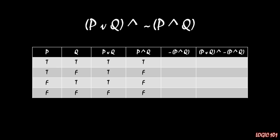For column five we have the negation of column four, which essentially flips the on-and-off switch from column four. We take all values of TRUE and switch them to FALSE, and all values of FALSE and switch them to TRUE. Doing that gives us FALSE in the top row and TRUE in the bottom three rows.